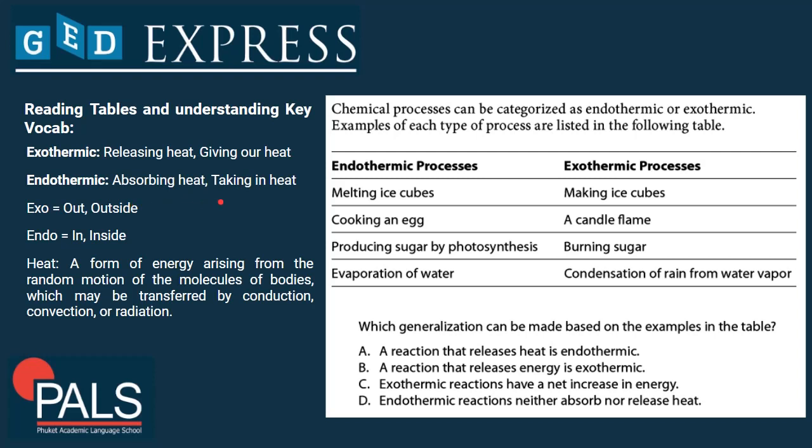Two prefixes very important to remember for GD Science are exo and endo. Exo means out or outside; endo means in or inside. Besides exothermic and endothermic, we have other terms like endoskeleton and exoskeleton. We humans have an endoskeleton — our skeleton is on the inside of our body. A crab, for example, has an exoskeleton — the hard parts that protect and stabilize its body are on the outside.